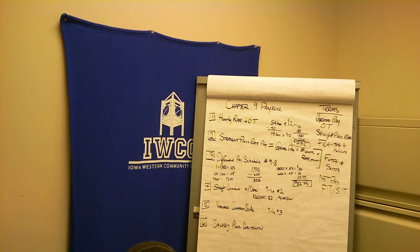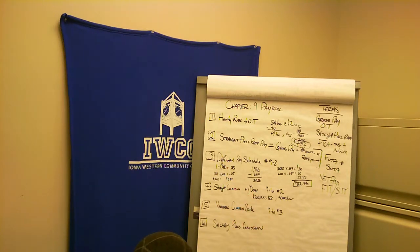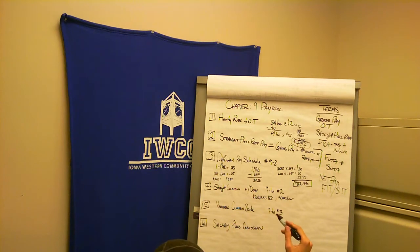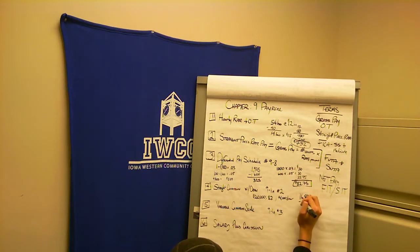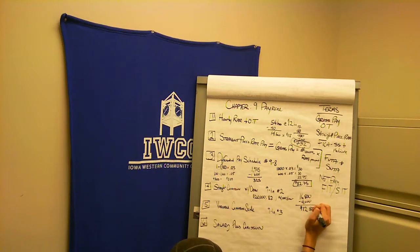Another way is a straight commission draw, which means you make 100% commission but you've already had an advance on your paycheck, which is called the draw. In practice problem number 2, your sales for the month were $210,000 and you get 8% commission. So $210,000 × 0.08 = $16,800, but you've already had a $4,000 advance or draw. So your pay will actually be only $12,800, because you've already taken that $4,000 out.